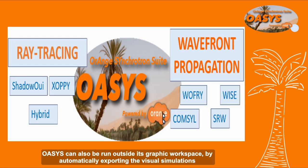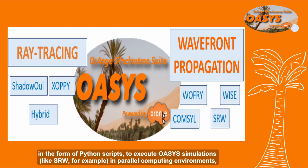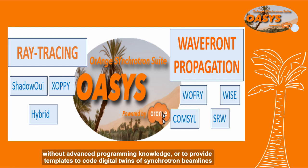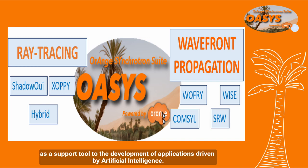OASYS can also be run outside its graphical workspace by automatically exporting the visual simulation in the form of Python scripts, to execute OASYS simulations — like SRW, for example — in parallel computing environments without advanced programming knowledge, or to provide templates to create digital twins of synchrotron beamlines as a support tool for the development of applications driven by artificial intelligence.